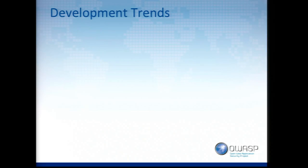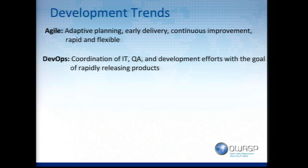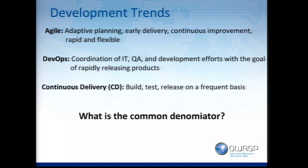I'm going to introduce what this platform is and talk about the motivation behind it — why we developed it inside Cisco. Looking at development trends today: the key terms are agile — adaptive planning, early delivery, continuous improvement, rapid and flexible. DevOps coordinates IT facilities, QA teams, and development efforts with the goal of rapidly releasing products. Continuous delivery is about building, testing, and releasing on a frequent basis. The common denominator is speed and agility — delivering to end customers as fast as possible. This can be an enemy for security.